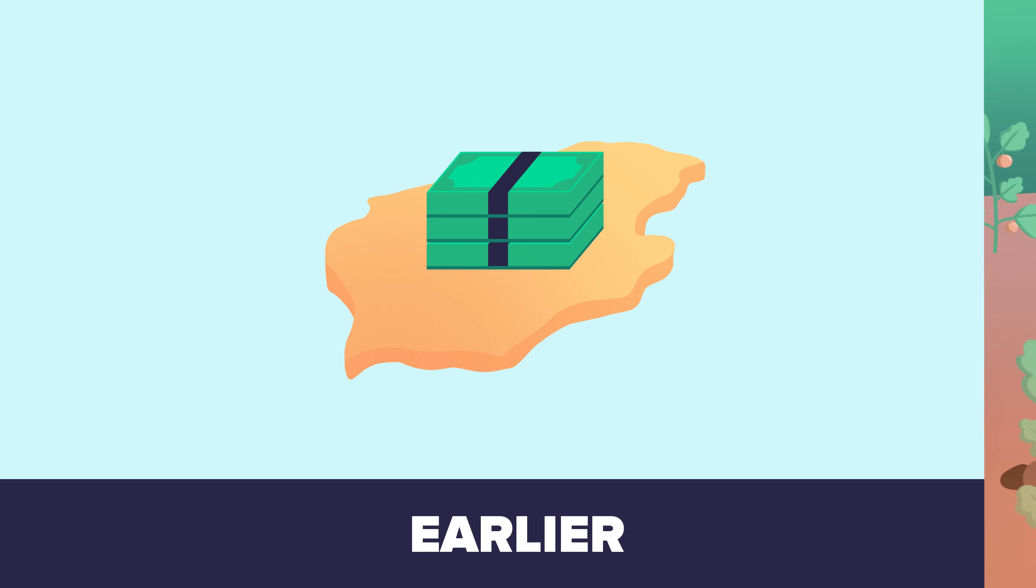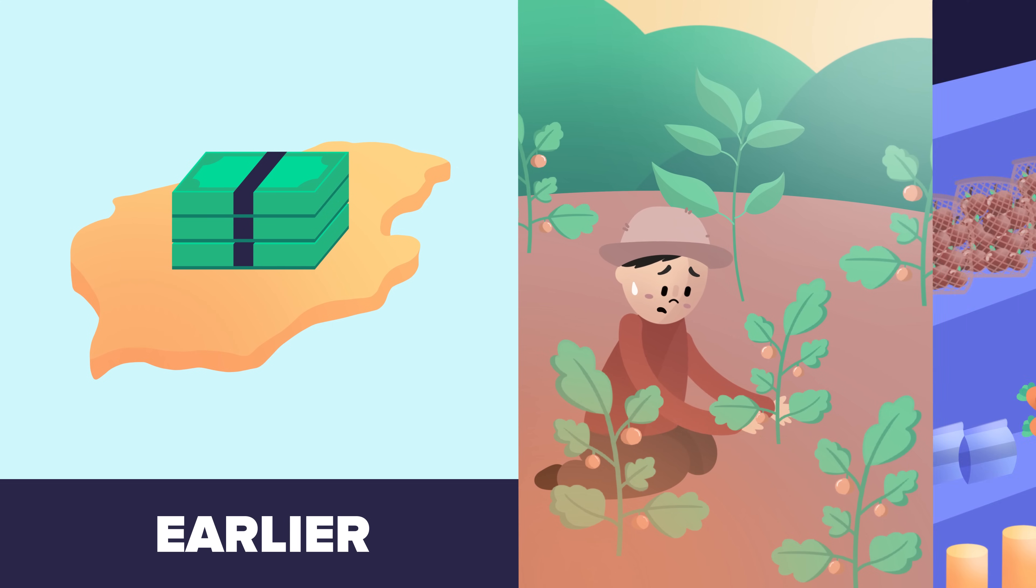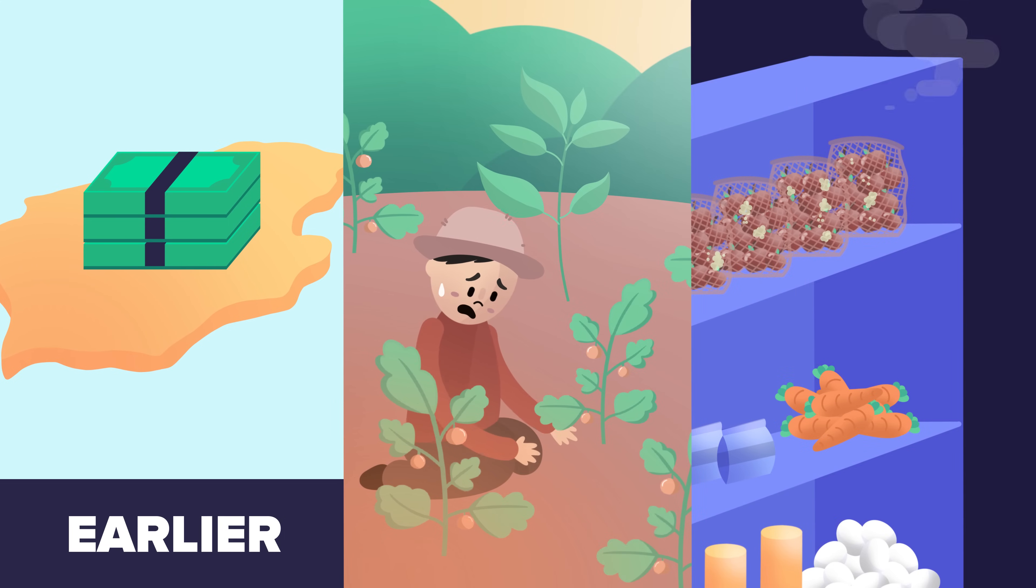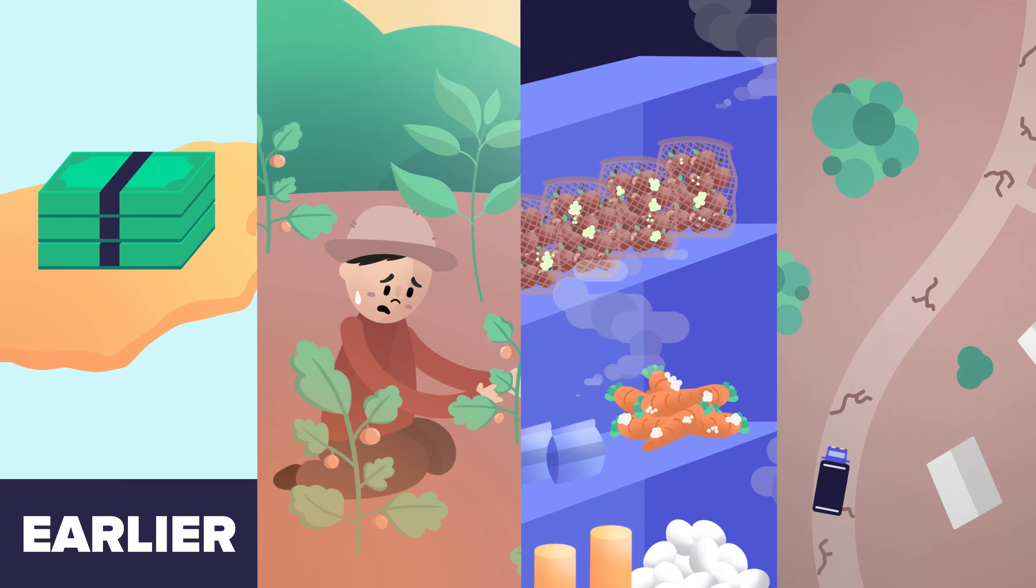Food losses in lower income countries mostly occur earlier in the supply chain, due to poor harvesting techniques, insufficient storage and cooling facilities, and a lack of infrastructure for food transport and marketing.